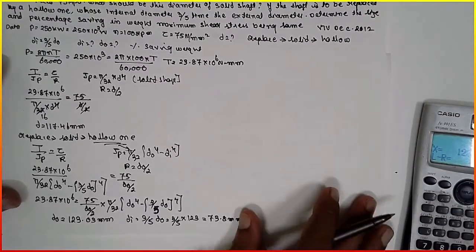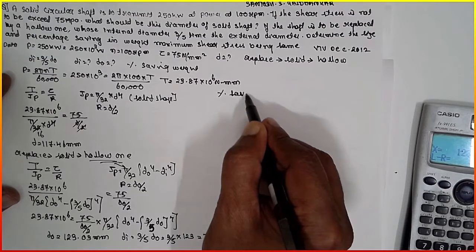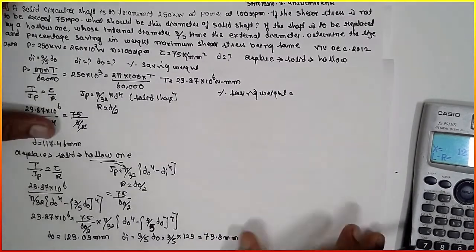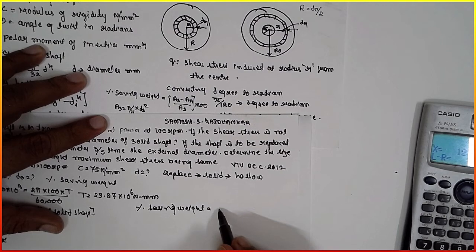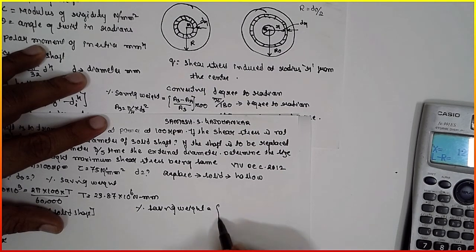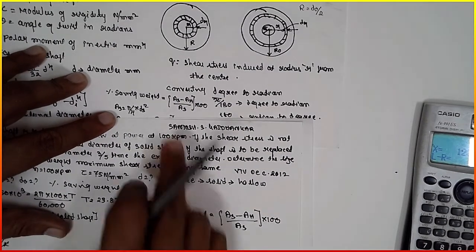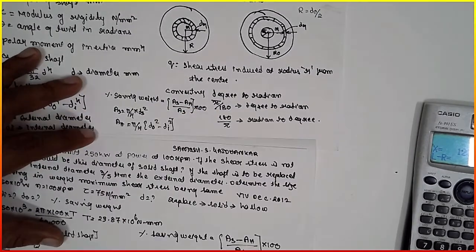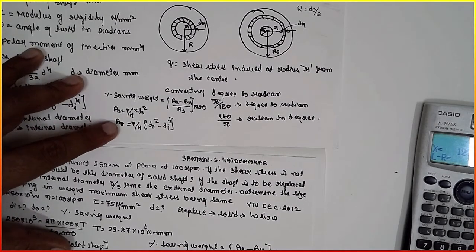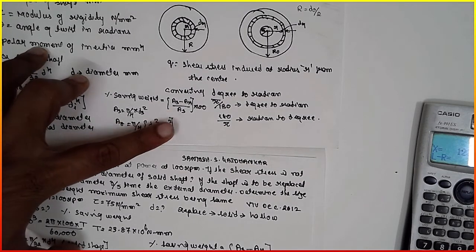Now for the percentage of saving in weight, the formula is: % saving = [(Area of solid − Area of hollow) / Area of solid] × 100. Area of solid = (π/4) × ds², and area of hollow = (π/4) × (D0² − Di²).